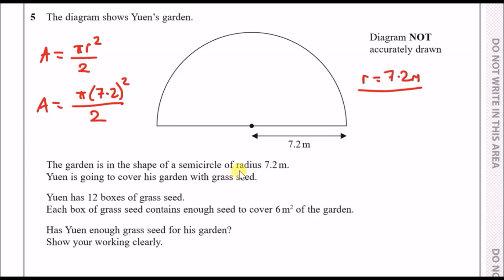We know that the radius is 7.2 meters so we're just going to plug in 7.2 for r. So our area is actually going to be pi times 7.2 squared all over 2. When you put this in a calculator you should get an area of about 81.43 meters squared.